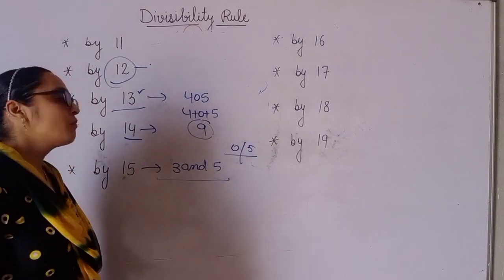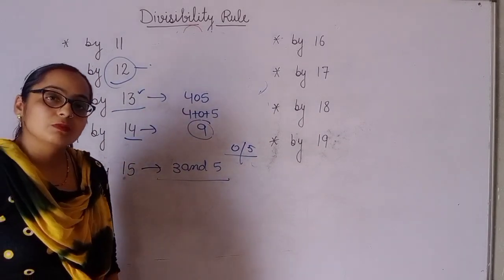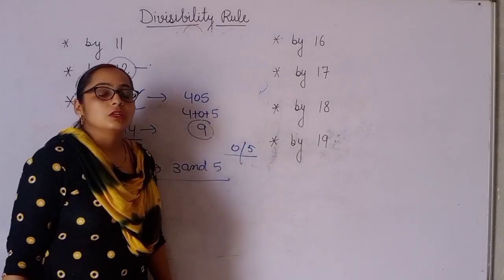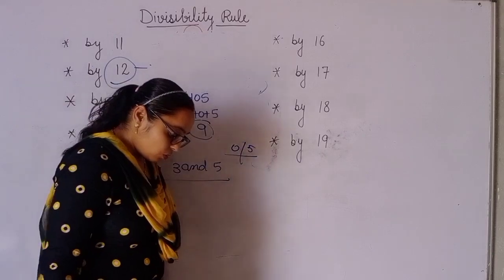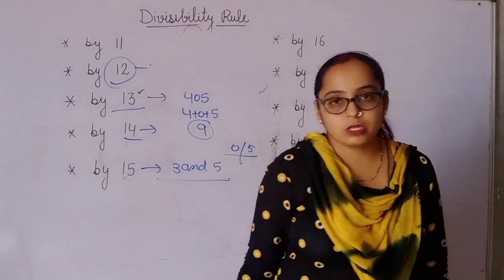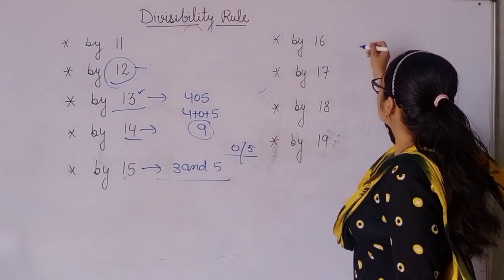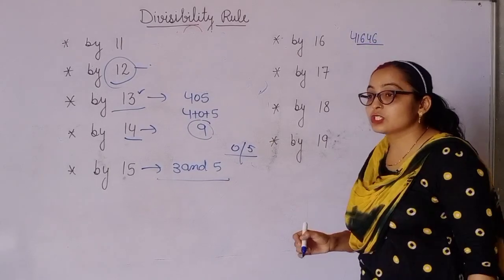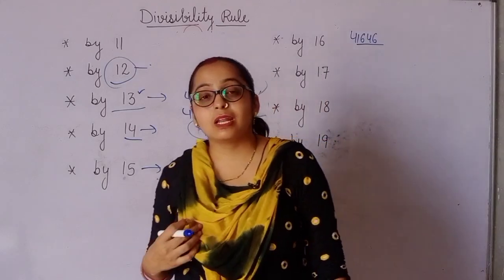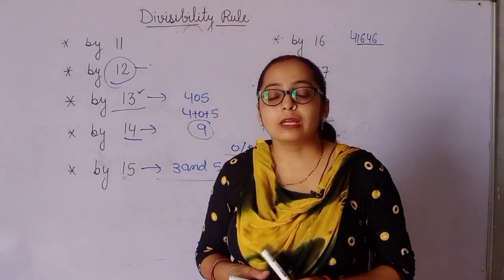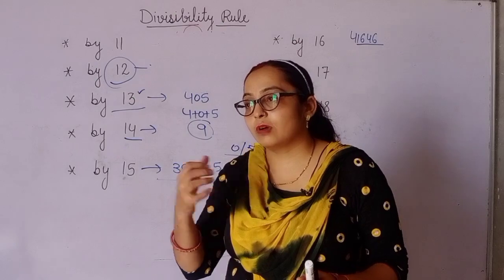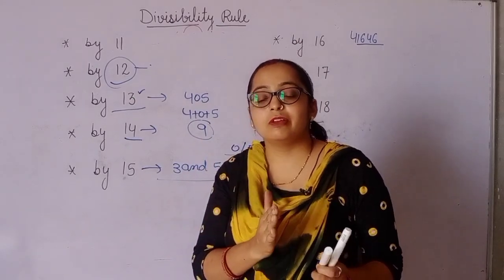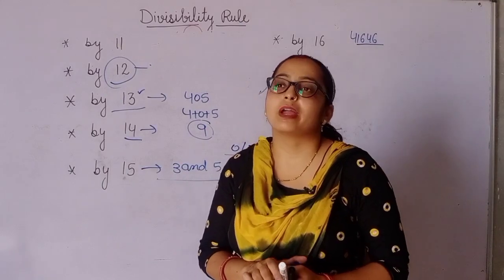Now, for 16: which numbers are divisible by 16? Check the last four digits. Suppose you have any number like 41646. Check the last four digits — 1646 — and see whether they are divisible by 16 or not. If those last four digits are divisible by 16, then the complete number is also divisible by 16. You need to do the division to verify.